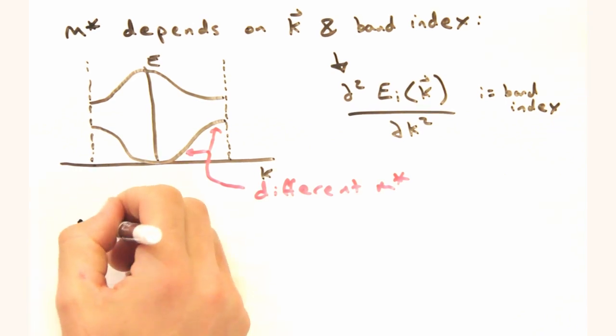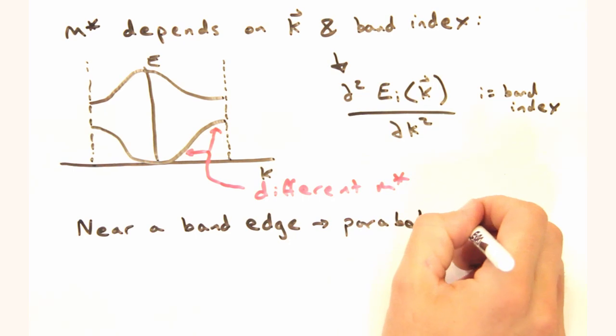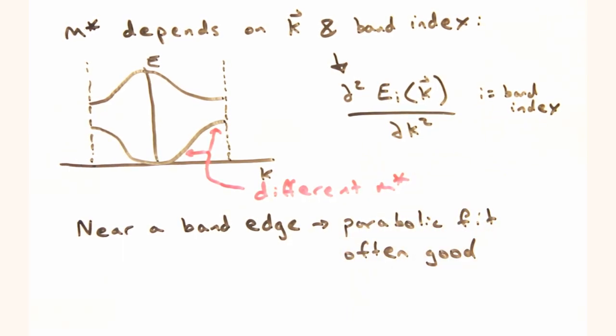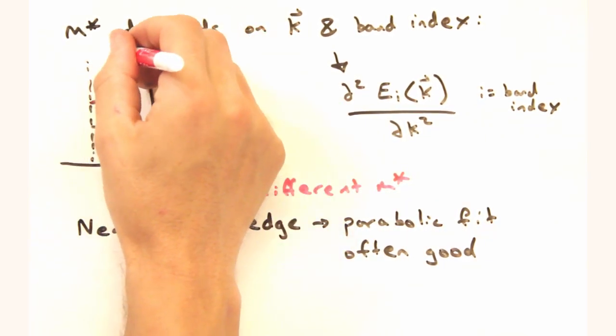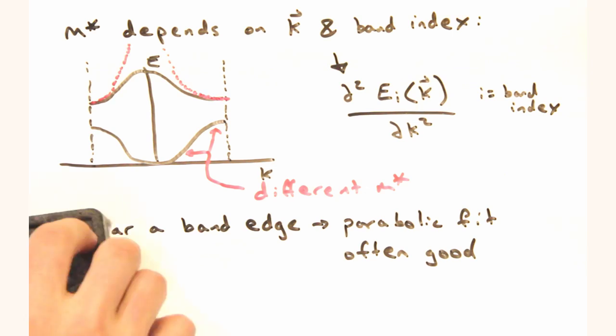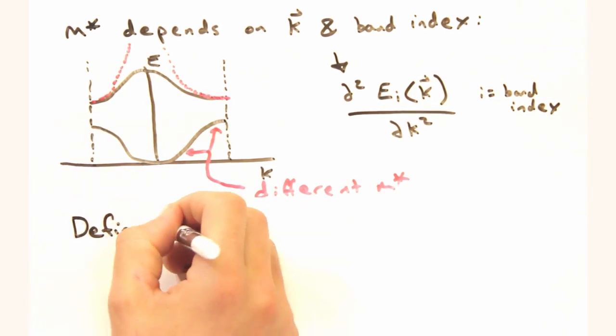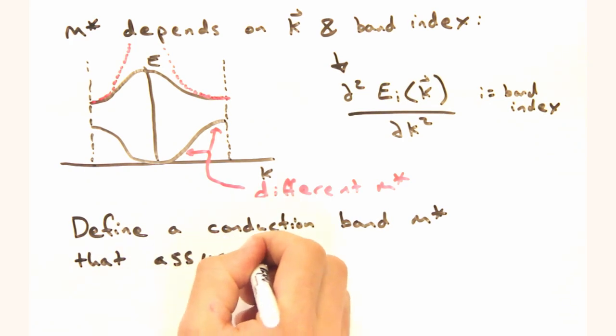And while the whole band is definitely not a parabola, we could probably fit one to the bottom part of the band where there are electrons. Like this. And since it's a parabola, the effective mass will be constant in this parabolic regime.